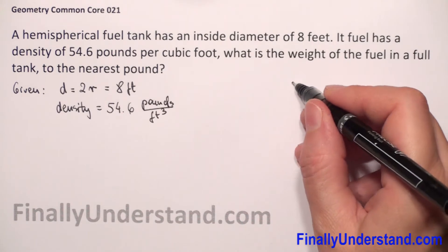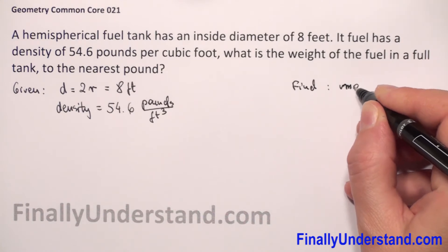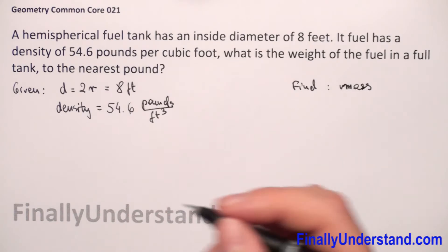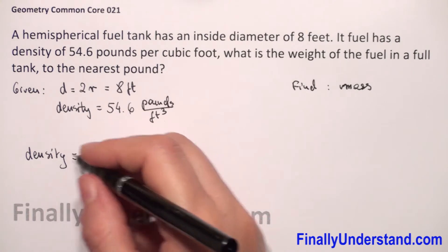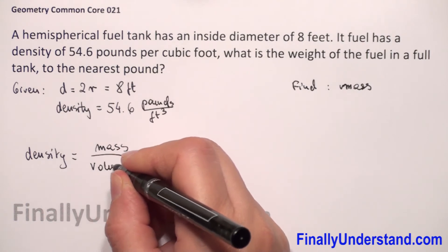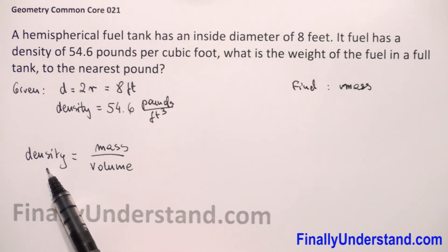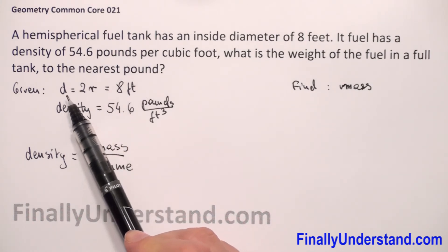So we need to find the mass. We know the formula for density is mass over volume. We have the given density and we need to find the mass, but we don't know the volume yet. However, we have the given diameter which is 8 feet.